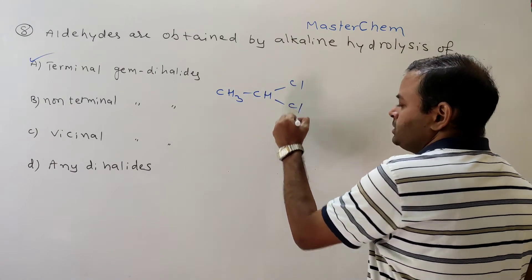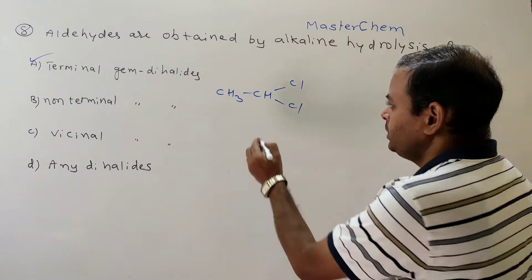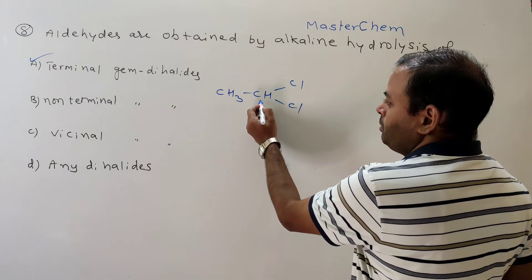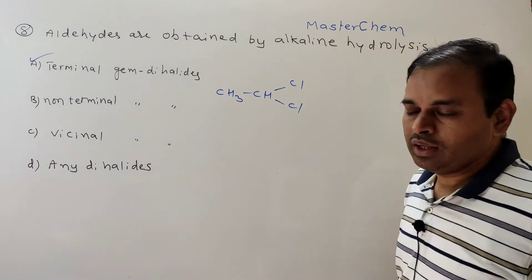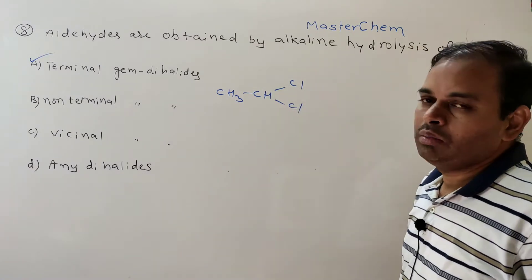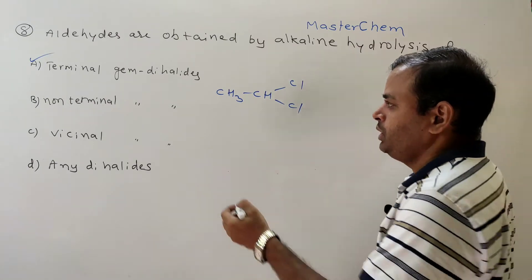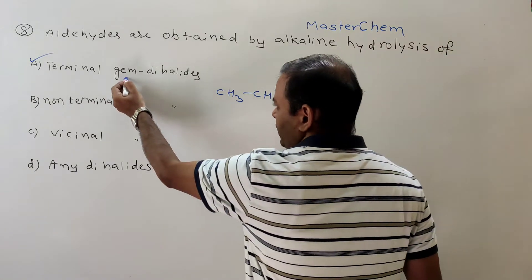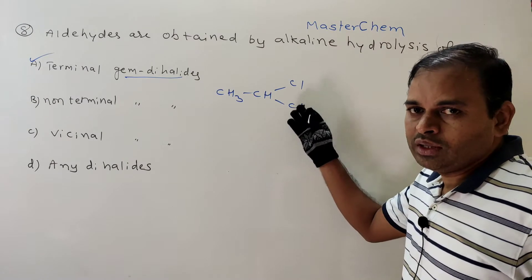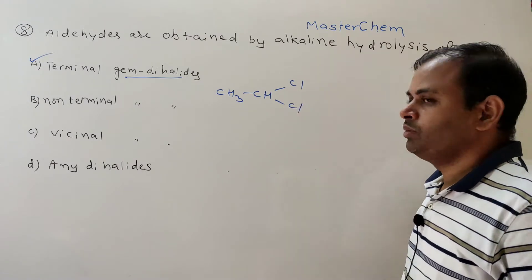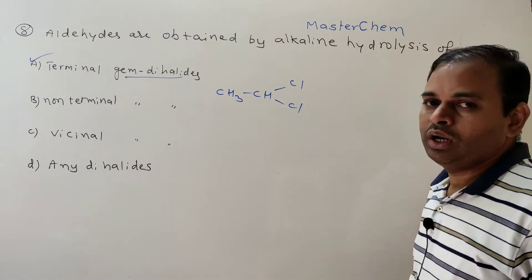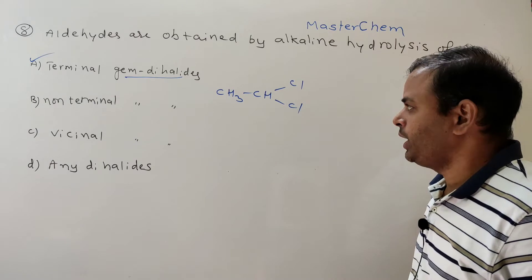For example, CH₃CHCl₂ — this is called a terminal gem dihalide. Here, at the terminal position, two halogen atoms are present. That's why it is called a terminal gem dihalide. Whenever two halogens are present on the same carbon at a terminal position, it is said to be a terminal gem dihalide.